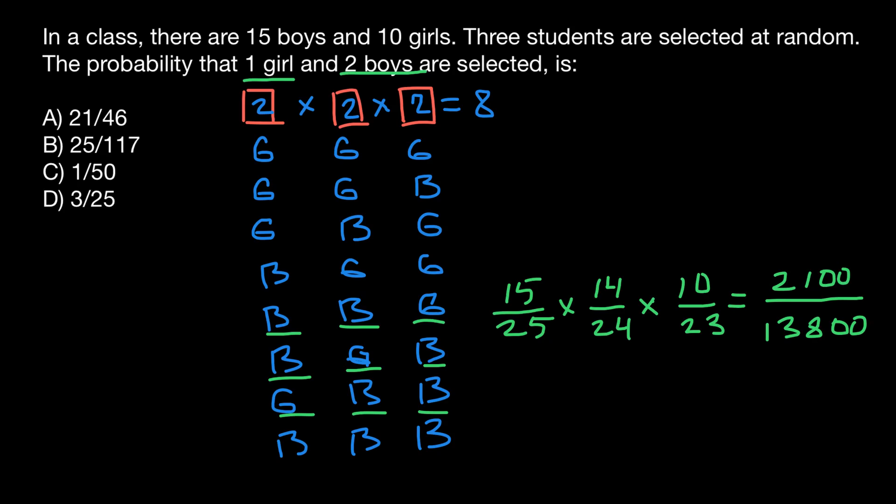To choose the first boy, the probability would be 15 out of 25. To choose a girl would be, this time, 10 out of 24. And to choose a boy again would be: we already chose one boy, so we are choosing from 23 people, and we have 14 boys left. So this is going to be the same number: 2,100 over 13,800.